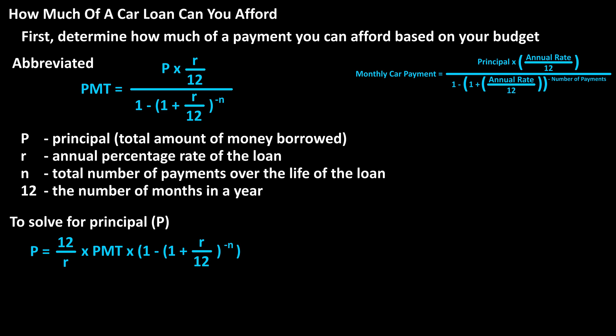And we have principal equals 12 divided by R, the annual percentage rate, times the monthly payment amount, times the quantity, 1 minus the quantity, 1 plus R divided by 12, raised to the negative N, the total number of payments.